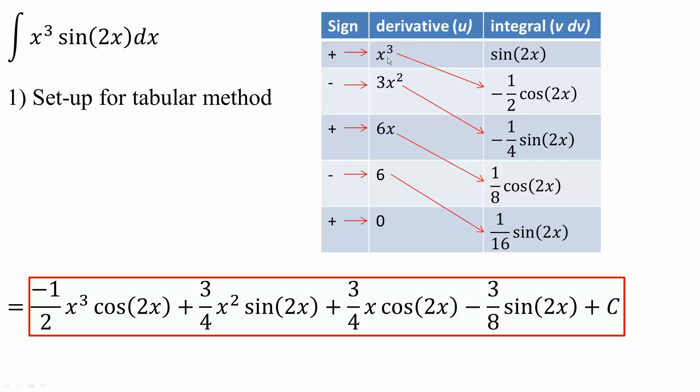Next, we take the derivative of x cubed to get 3x squared. Take the derivative of this term, we get 6x. Likewise, 6x becomes 6, and 6 finally becomes 0.